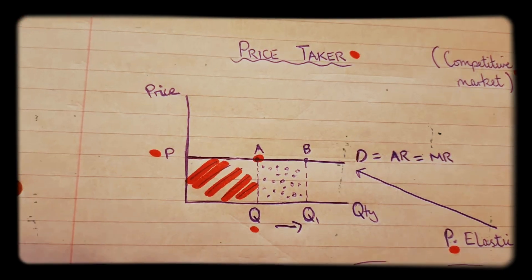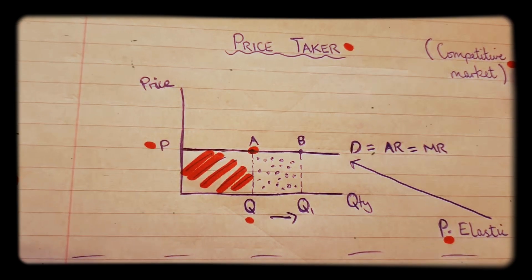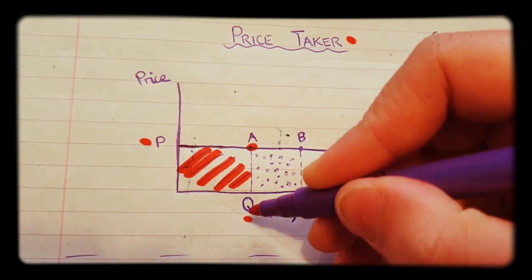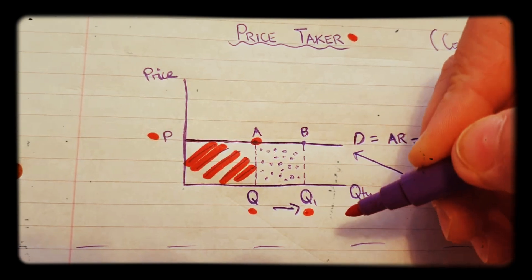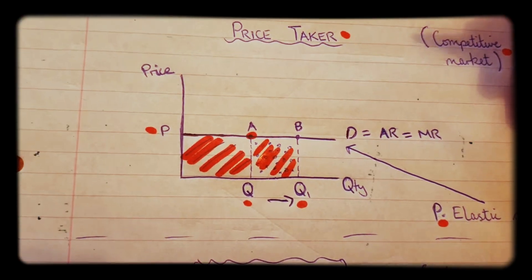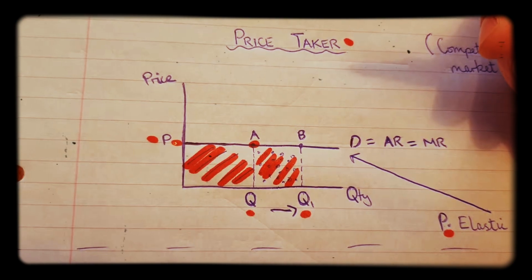Now what about if the firm wants to calculate its marginal revenue? How would it work that out? Well, if we sold an extra unit, let's say we go from there to there, this is the amount of extra revenue that we would make. And can you see that the price is still the same at this point?